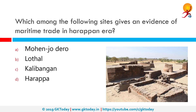Which among the following sites gives evidence of maritime trade in the Harappan era? The correct answer is Lothal. Lothal is one of the southernmost cities of the ancient Indus Valley civilization, currently located in the Bhal region of the modern state of Gujarat. There is evidence that it was first inhabited in 3700 BCE. Lothal's rivers provided direct access to the sea, and although now sealed from the sea, its topography and geology reflect its maritime past.